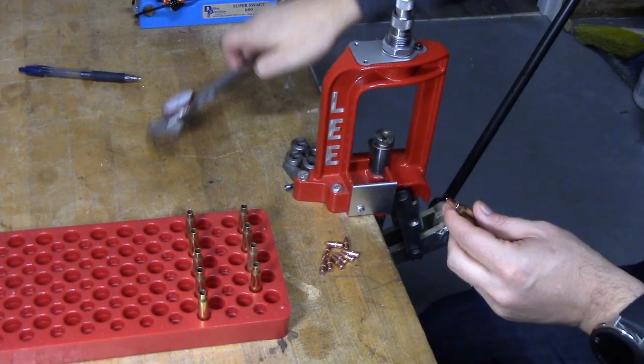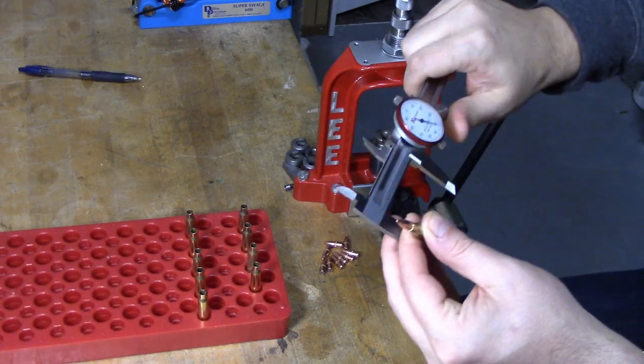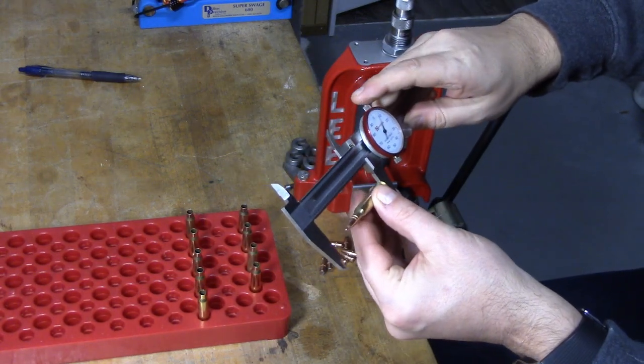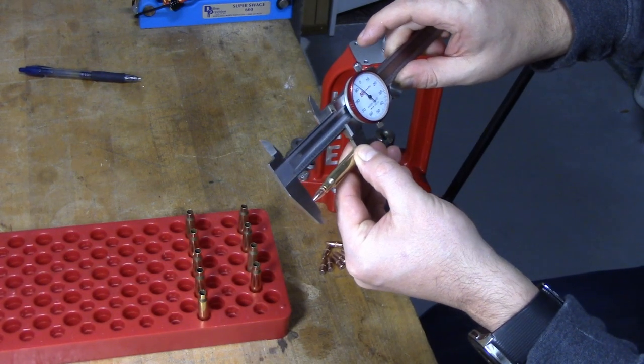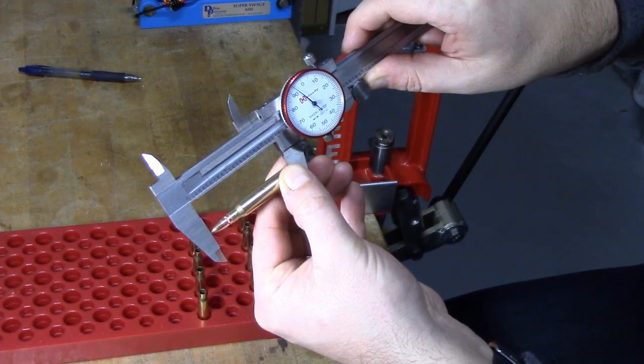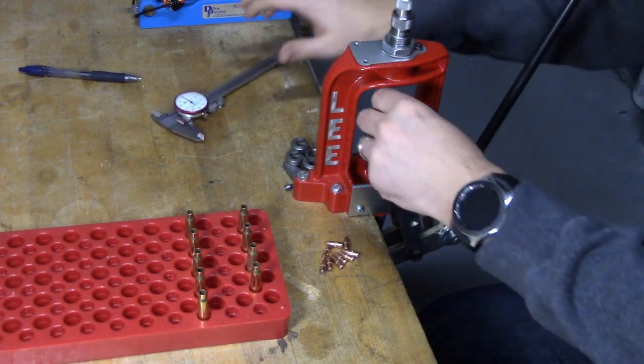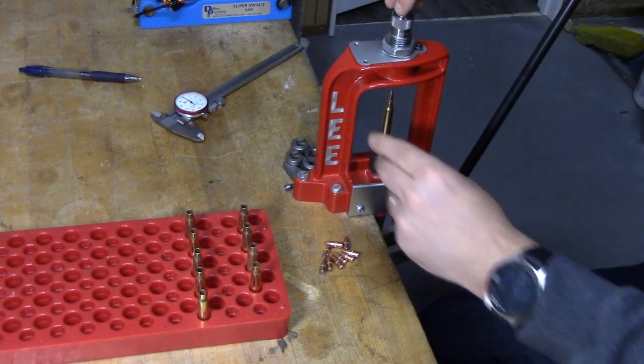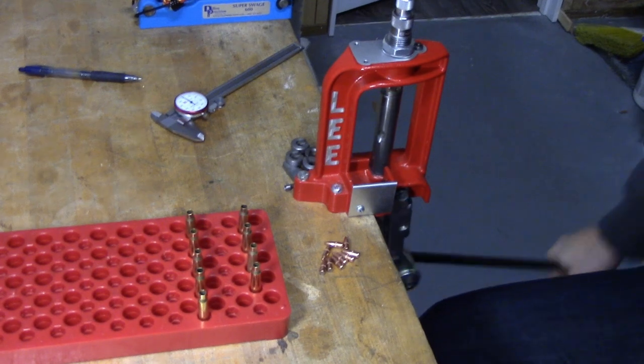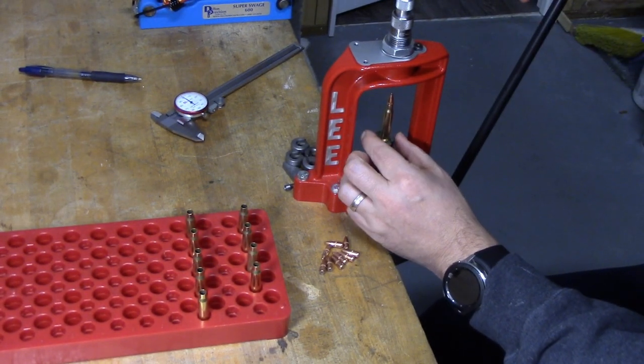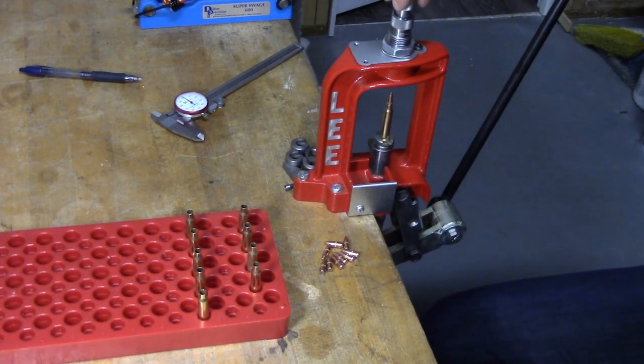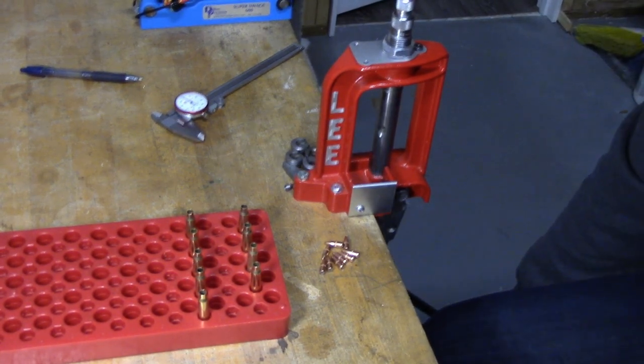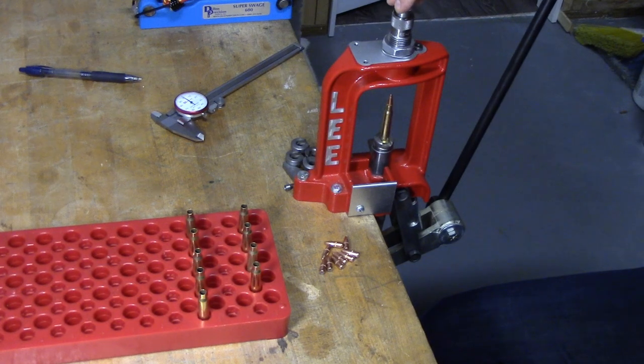Alright, we're getting close and I'm just going to measure it to see where we're at. Right now we are at 2.295. Once you get this set, you can just repeat the process on all the other cases, but for the first time using the die, you've got to get your overall length dialed in. We're getting closer.